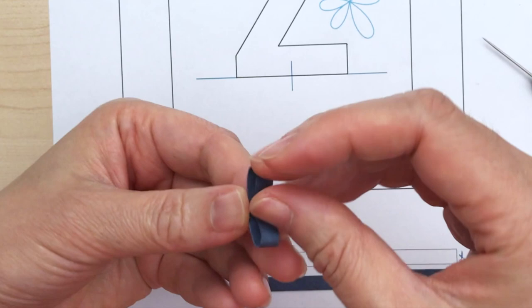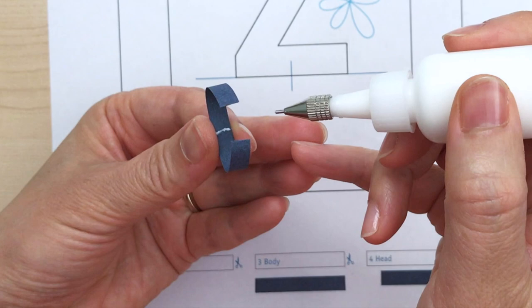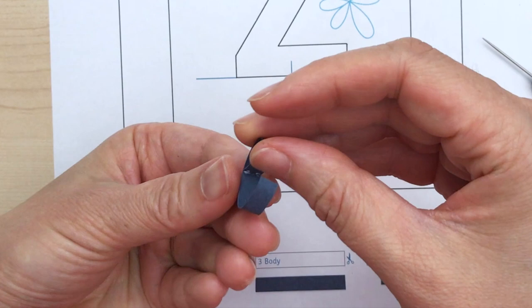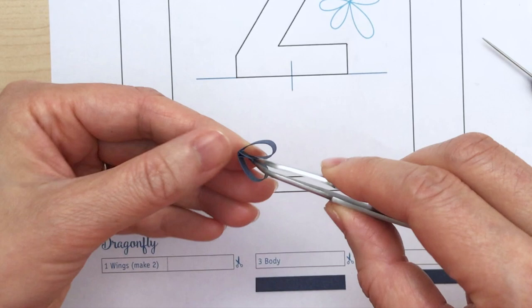I'm going to unfold it. And I'm just going to put a little bit of glue in the middle, and just on one of the ends. Then I'm going to bring my tweezers, and make sure that those two ends come together in the middle.